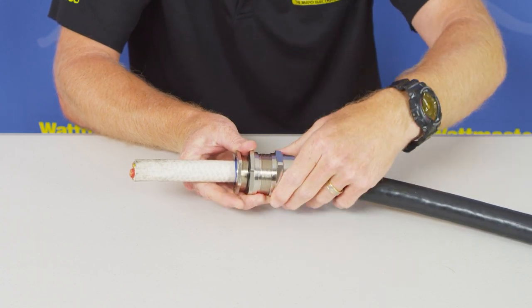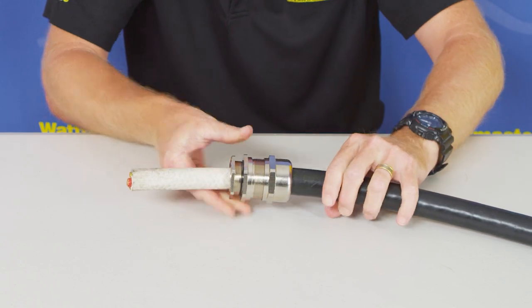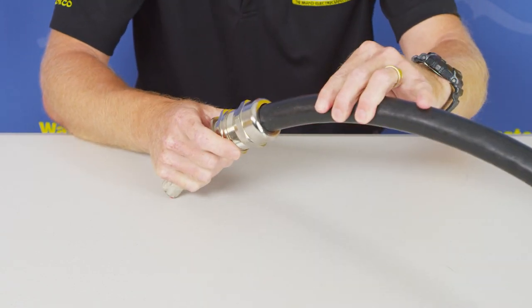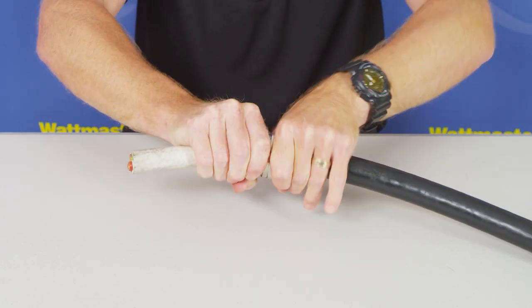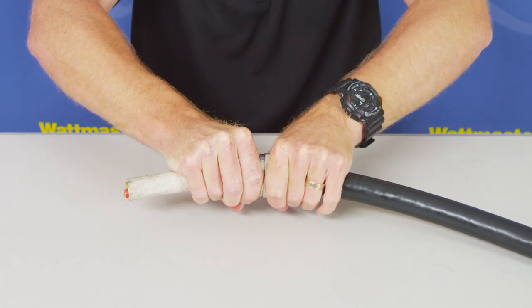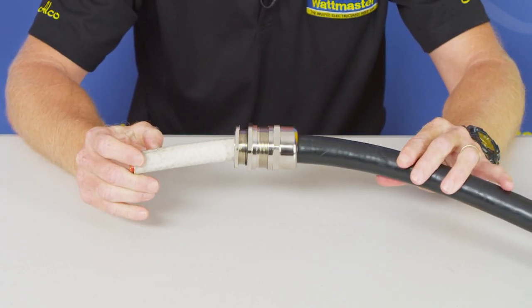So what we're doing there, we're actually closing down the knuckles onto the braid and we're also getting an IP rated seal on the back of the cable. And then we have a tight seal with our EMC Generation 5 cable gland.